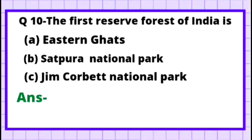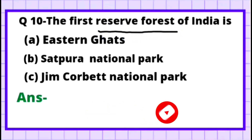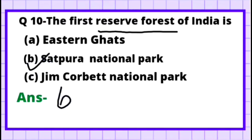Question 10: The first reserve forest of India — Option A: Eastern Ghats, Option B: Satpura National Park, Option C: Jim Corbett National Park. If the question were only about the first national park, the answer would be Jim Corbett. But for the first reserve forest, the correct answer is Option B — Satpura.